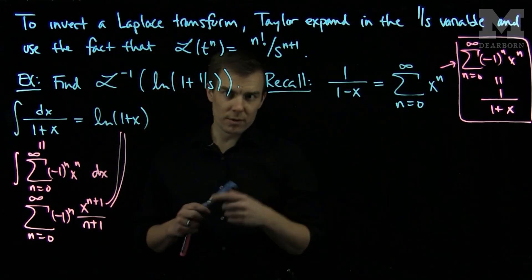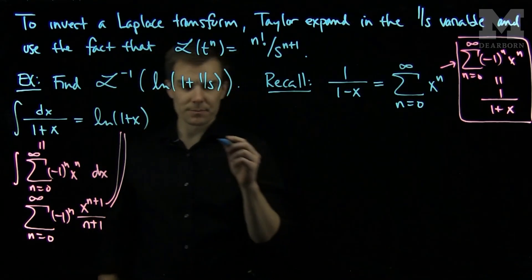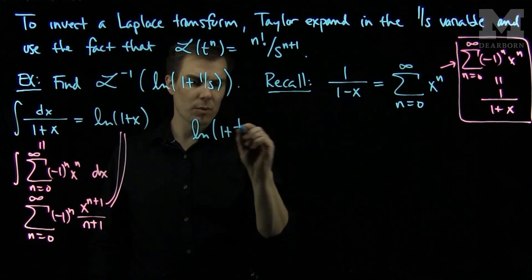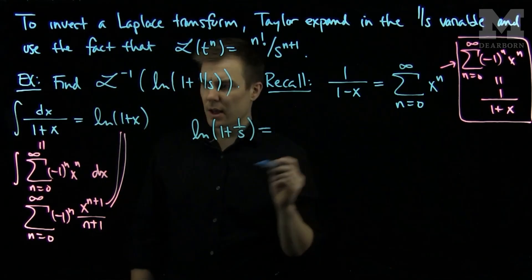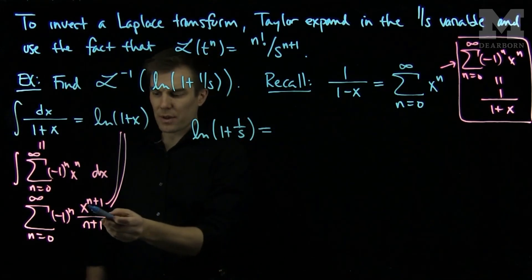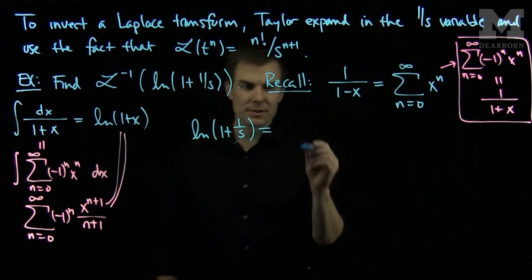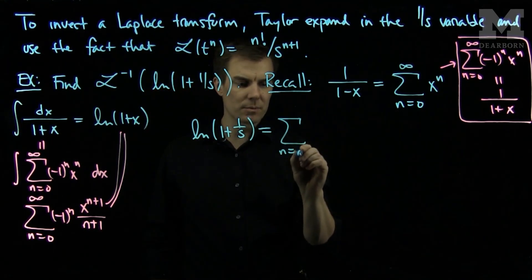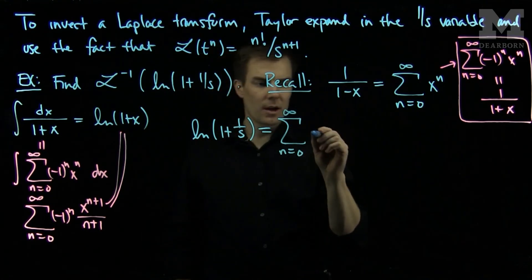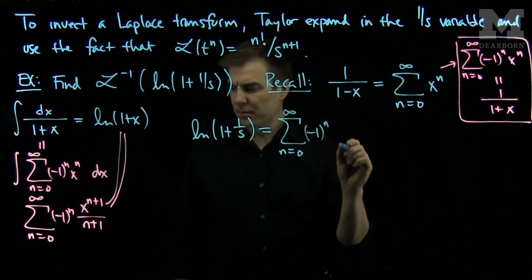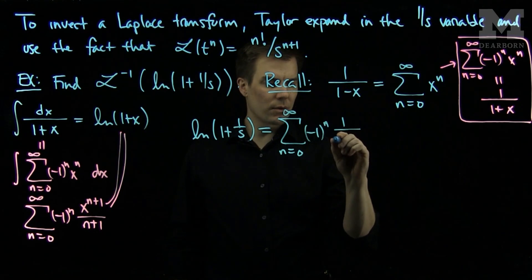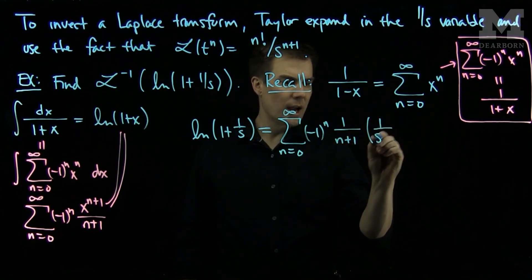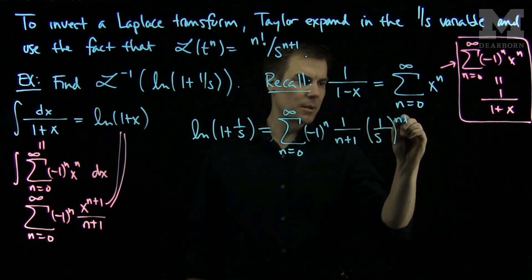I will use this fact to return to the Laplace problem. The natural log of 1 plus 1 over s will now be equal to this sum with x replaced with 1 over s. It will be the sum, n goes from 0 to infinity, of negative 1 to the n, times 1 over n plus 1, times 1 over s to the n plus 1.